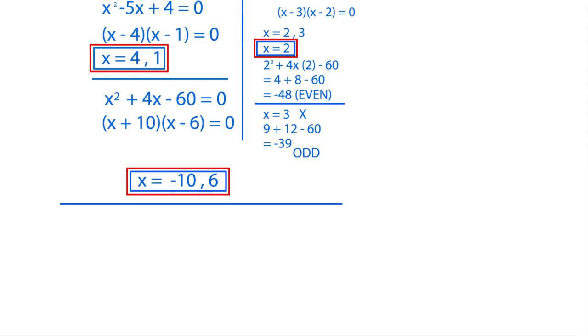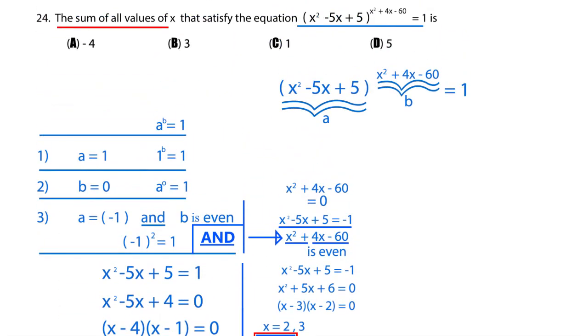So we have 4, 1, 2, minus 10, and 6. And that will equal 3. So the sum is 3, and therefore the answer is 24 is b.